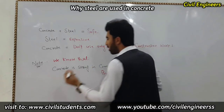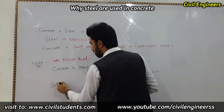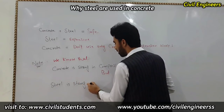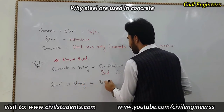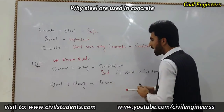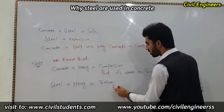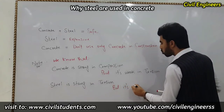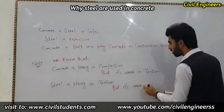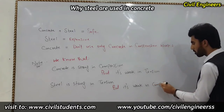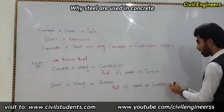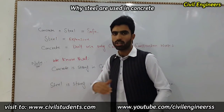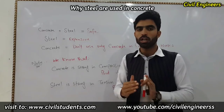Steel is strong in tension, but it's weak in compression. Therefore we have to use steel and concrete together to save the structure member.